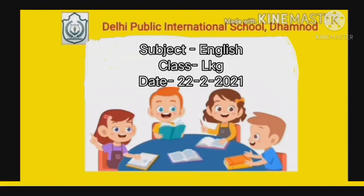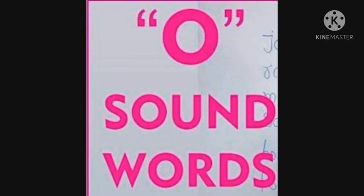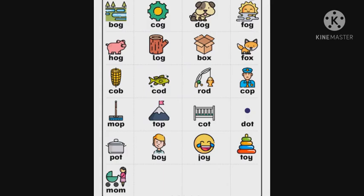We'll read some words. So, O sound words. We'll see some O sound related words. So, our first word is B, O, G — Bob. C, O, G — Cause. D, O, G — Dog. F, O, G — Fog.